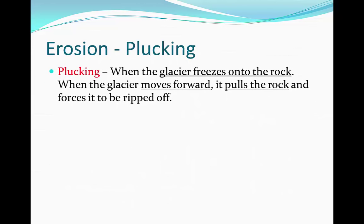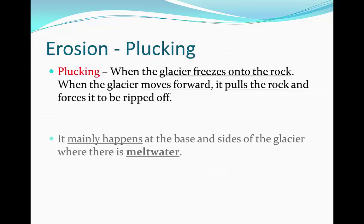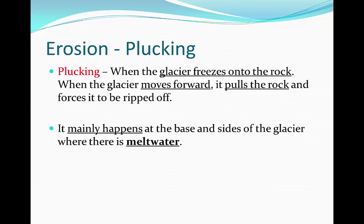Plucking is when the glacier freezes onto the rock. When the glacier then moves forward, it pulls the rock off and forces it to be ripped off the walls. It mainly happens at the base and the sides of the glacier, where there's melt water. Melt water is when the glacier begins to melt due to increased pressure. The melt water then freezes onto the glacier in colder months, and as a result, when the glacier moves forward, it plucks at the valley.